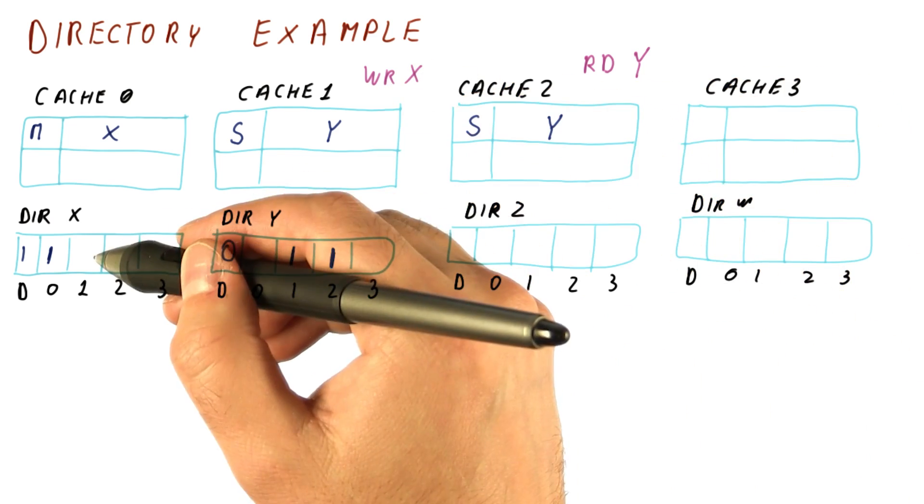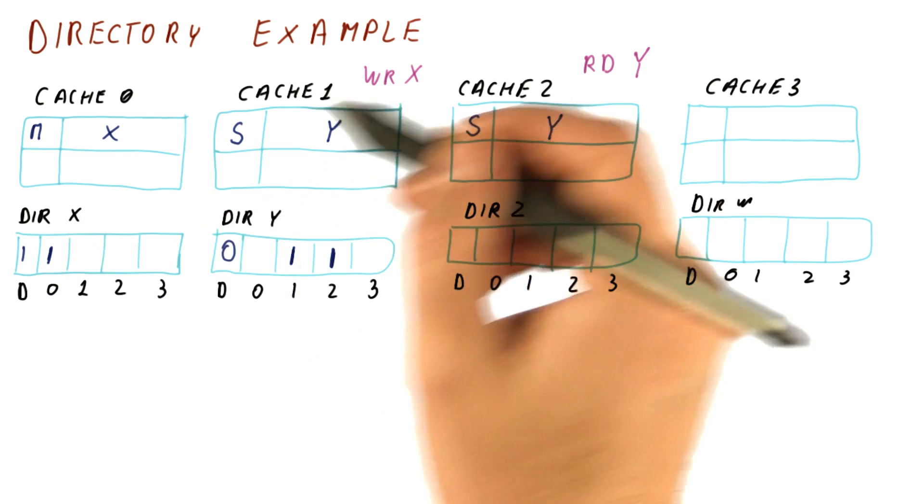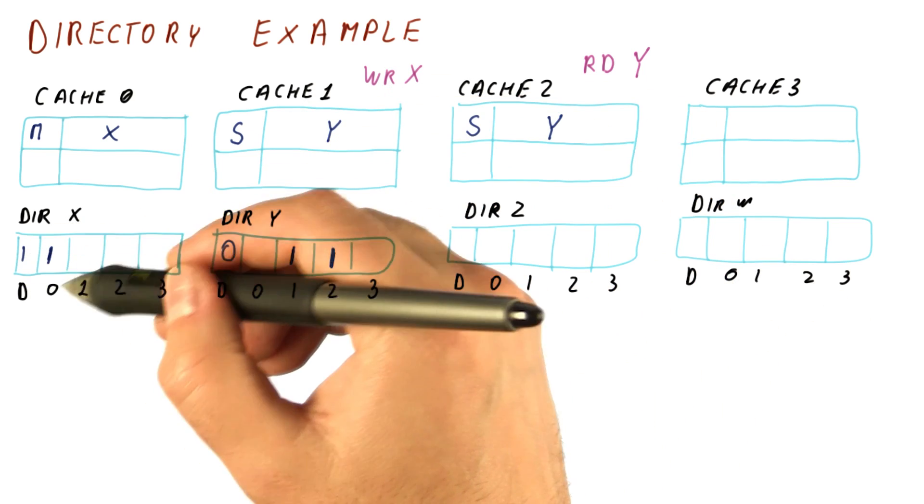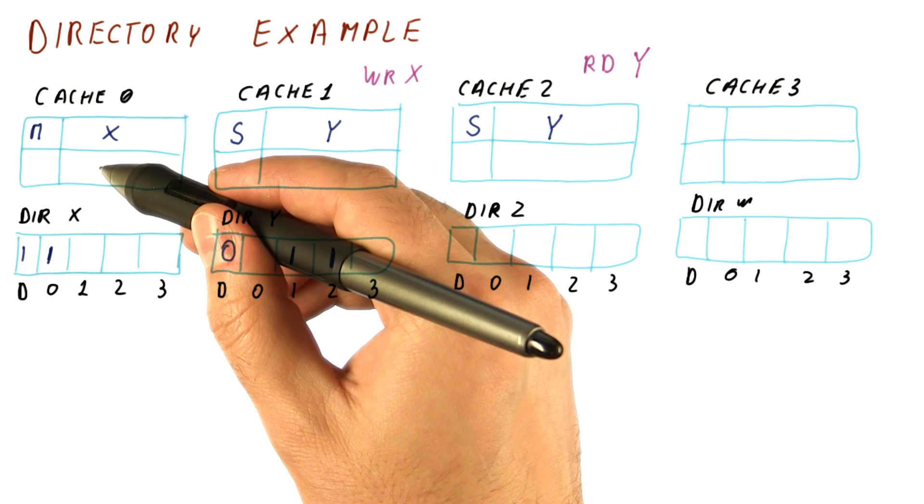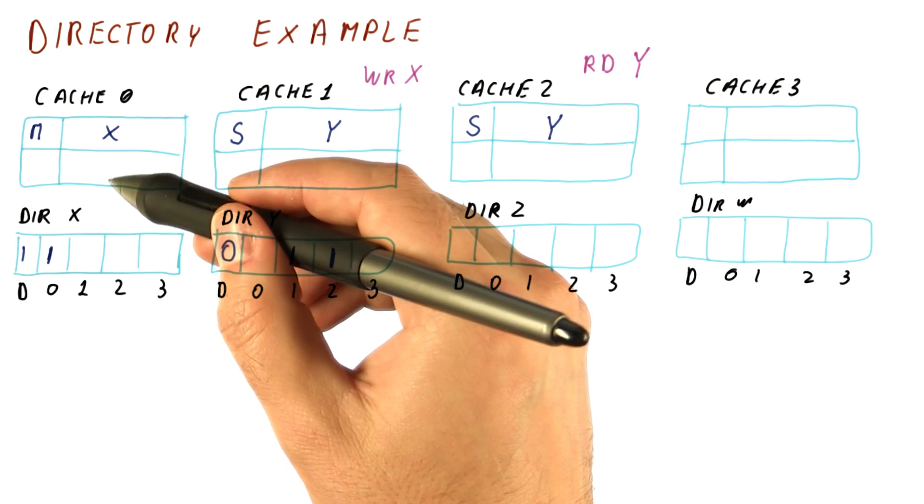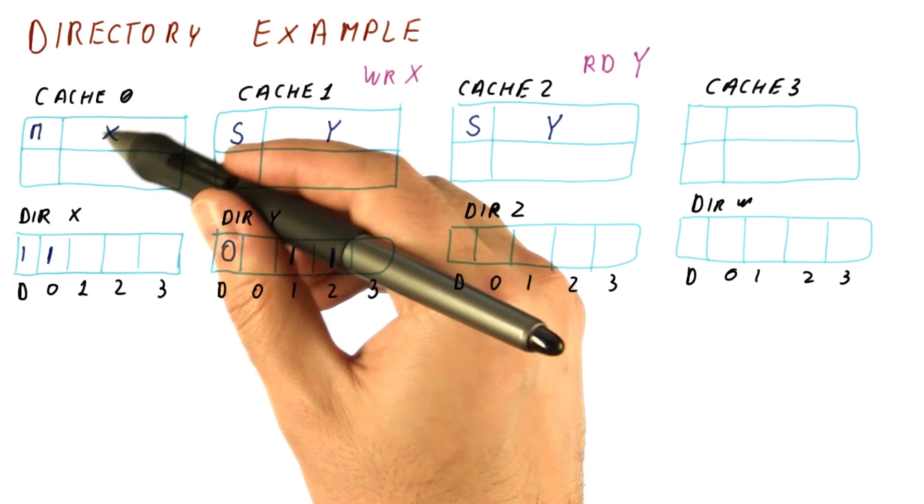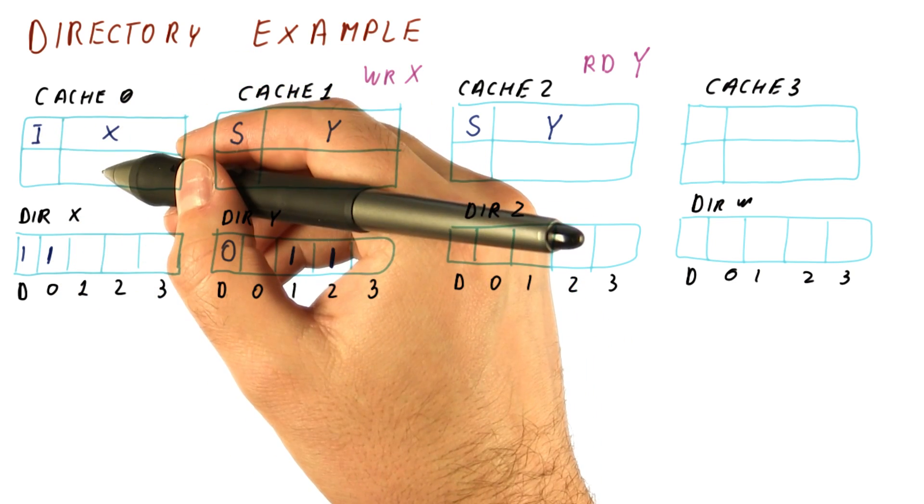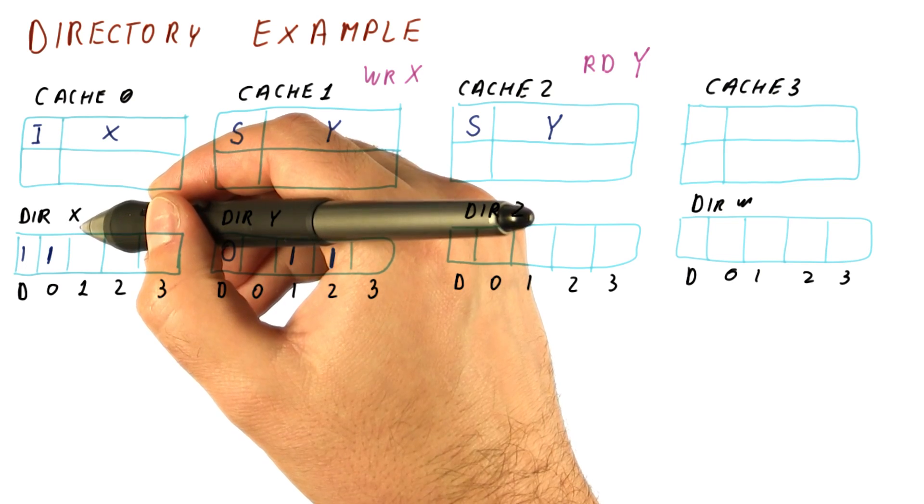Meanwhile, the write x is getting here and because we need to write, we're going to send an invalidation and an external write request to cache zero. So here, the cache needs to respond with the data and because it's a write request, it sets the state to invalid and responds with the data.